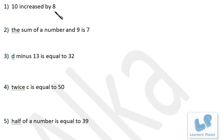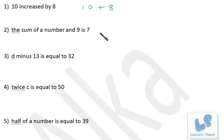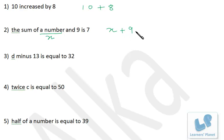Let's take this example: 10 increased by 8. 'Increase' means addition, so 10 increased by 8 is 10 + 8. Similarly, 8 more than 10 is the same thing. Next: the sum of a number and 9 is 7. Whenever you have 'a number,' choose it as a variable x. So the sum of x and 9 is 7: x + 9 = 7.